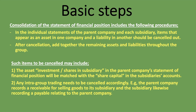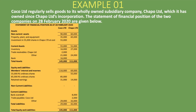That's basically what we do when we are doing the consolidation of the statement of financial position. Here's an example we'll quickly go through. Coco Limited regularly sells goods to its wholly owned subsidiary company, Chapo Limited, which it has owned since Chapo Limited's incorporation. The statement of financial position of the two companies on 28 February 2020 are given below. The subsidiary is wholly owned by Coco Limited, which makes it very simple for us. The parent company bought the subsidiary and is selling goods to its own subsidiary, so we need to take that into account with regard to cancellation.